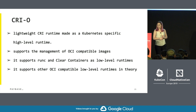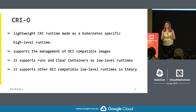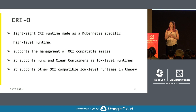CRI-O is a lightweight CRI runtime made specifically for Kubernetes as a high-level runtime. It supports the management of OCI-compatible images and supports RunC as a low-level runtime as well as clear containers. In theory it supports other OCI-compatible low-level runtimes, though in practice it still depends on some features of RunC.